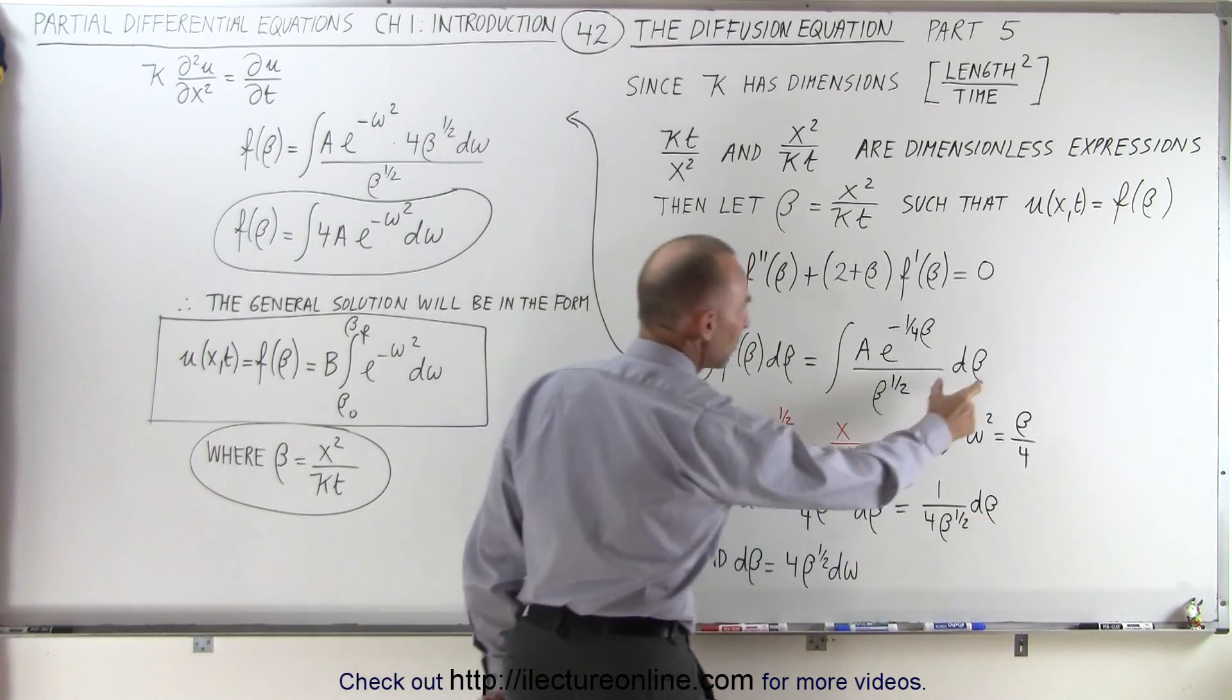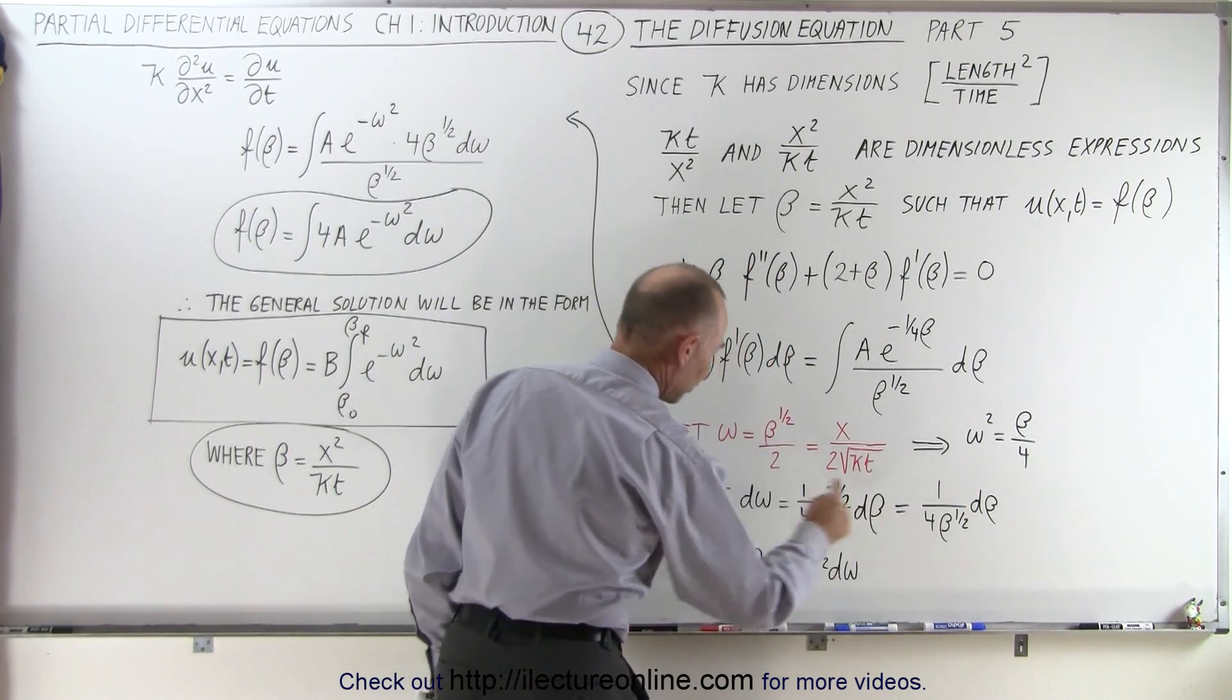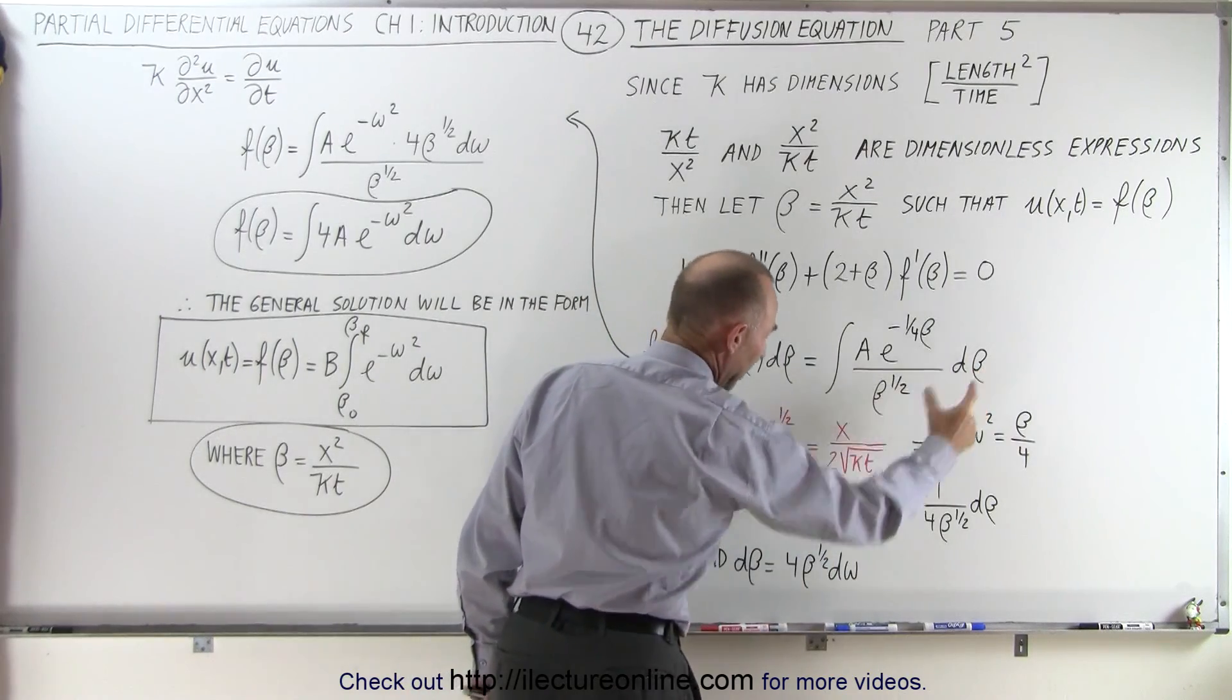If we now replace d-beta by what that is equal to, we can now solve for d-beta is equal to four times beta to the one half d-omega, so we replace this d-beta by this. We do that over here.